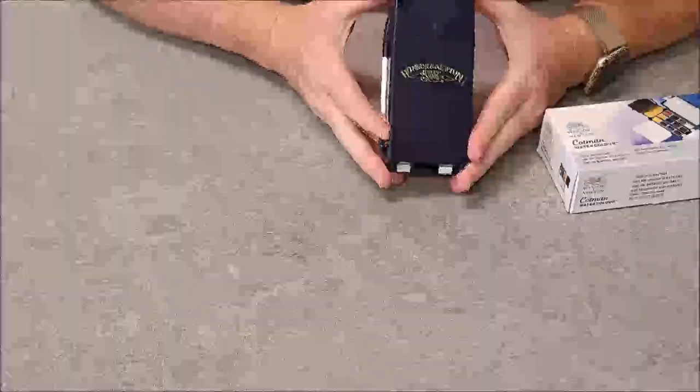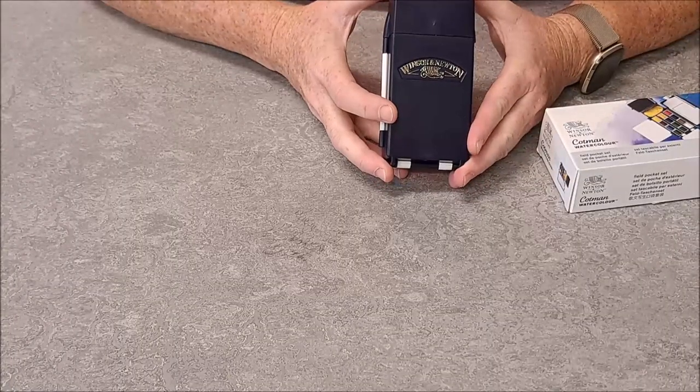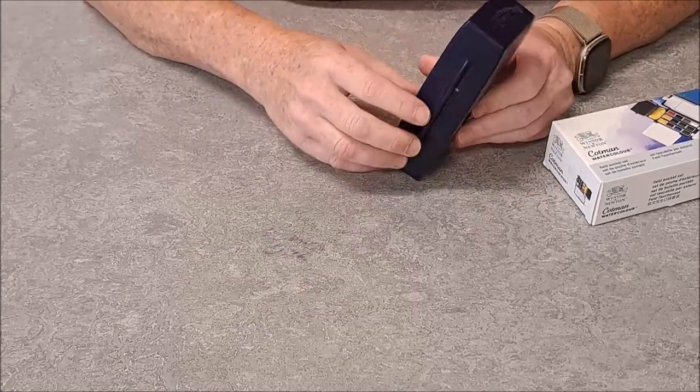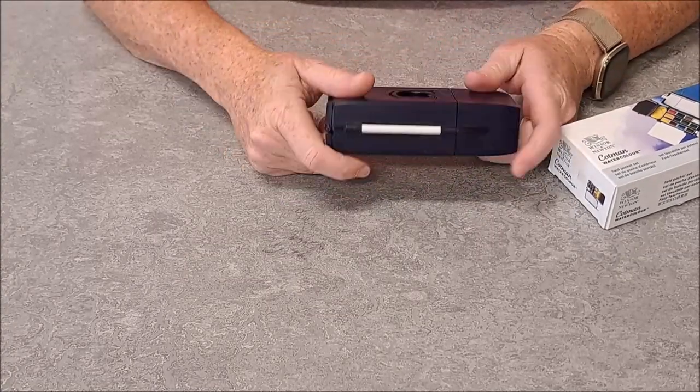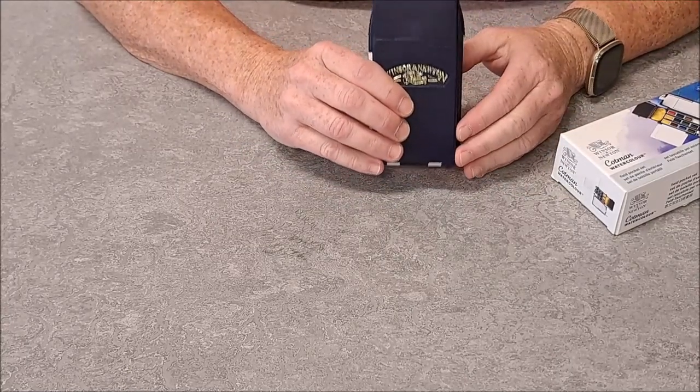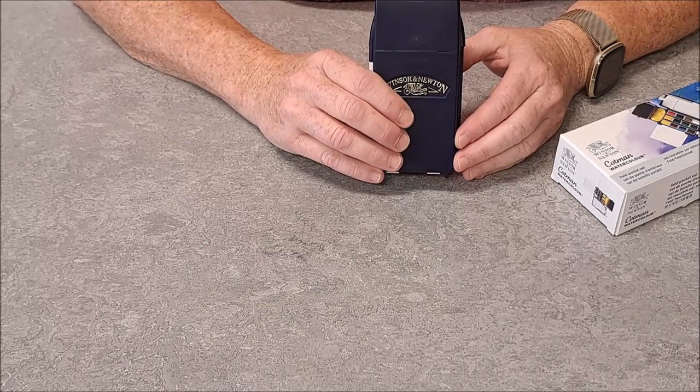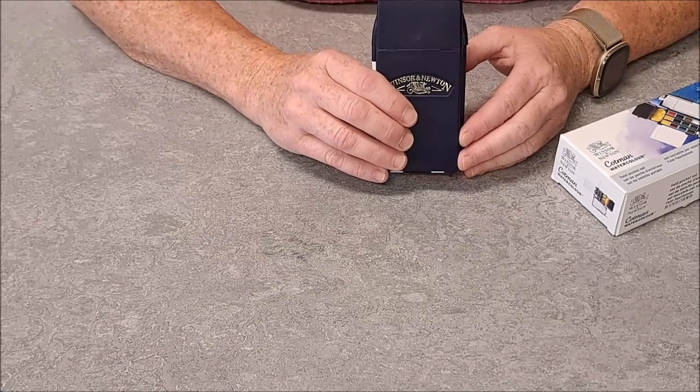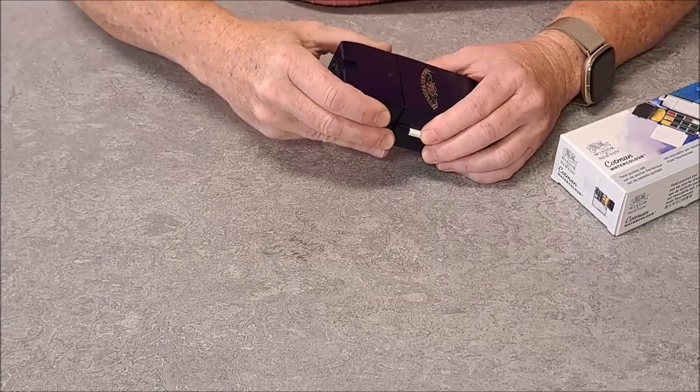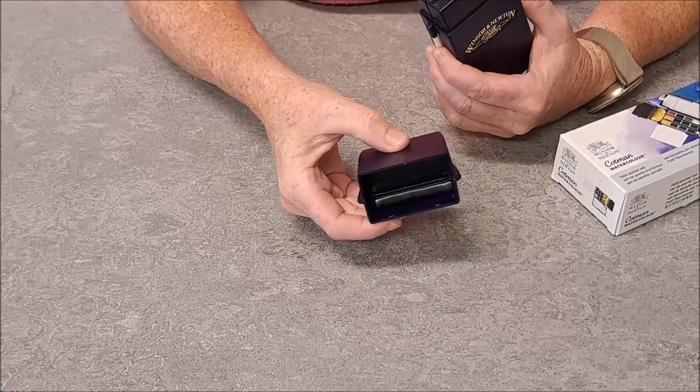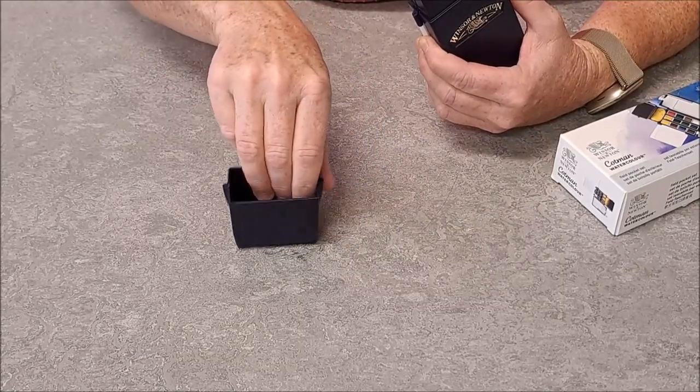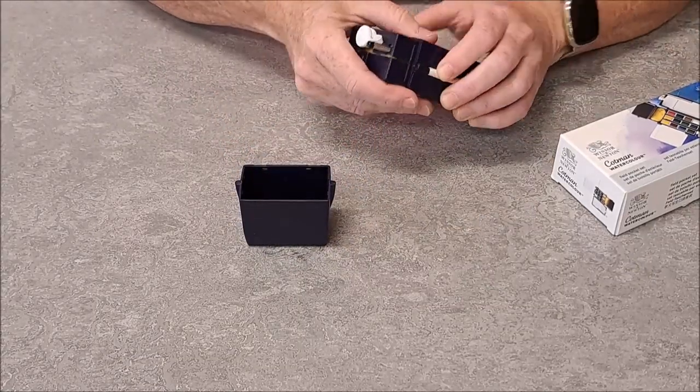Okay so here is the pocket field set and as you can see it's thicker than the other one but it's smaller otherwise. So it's about the size of one of those original, well not original but probably second or third generation mobile phones way way way back. It has this cap on the top that serves as a water reservoir. So it's pretty big and you can fit a fair bit of water in here more than you could a regular field set.